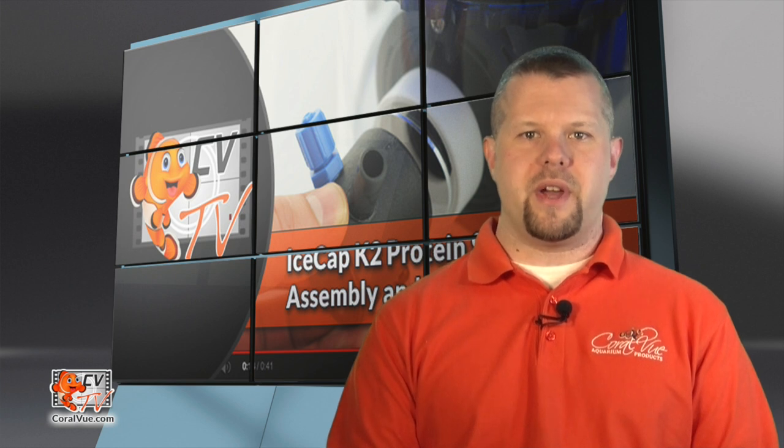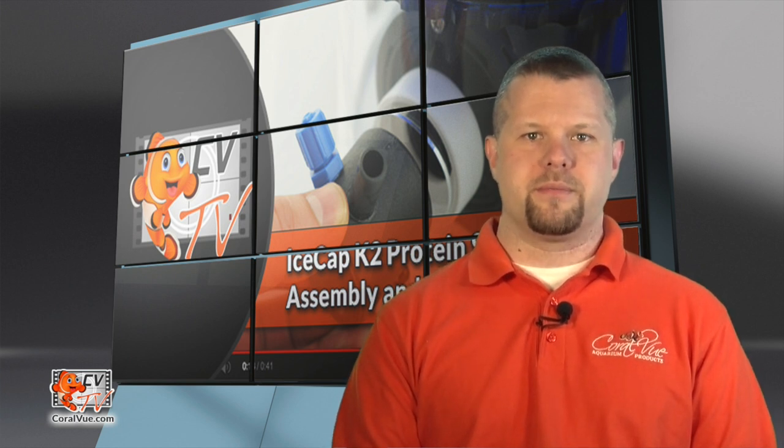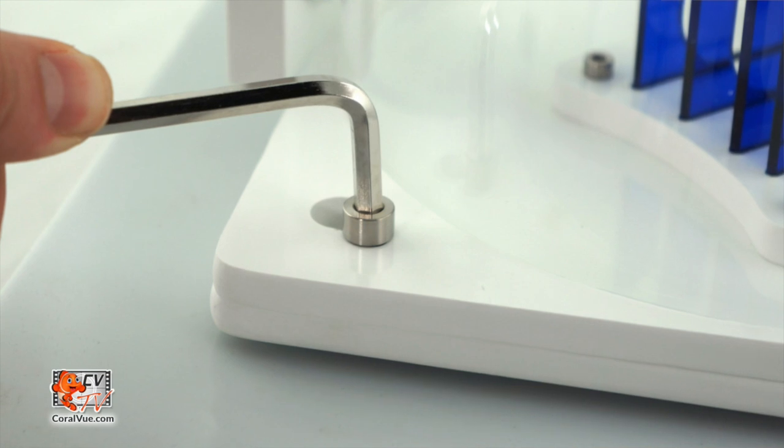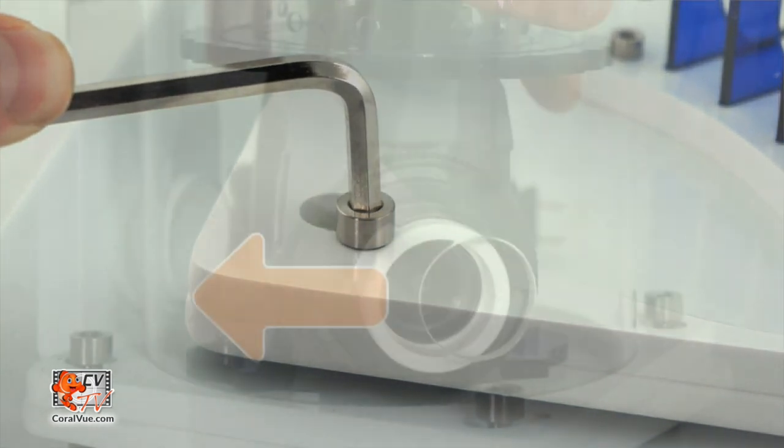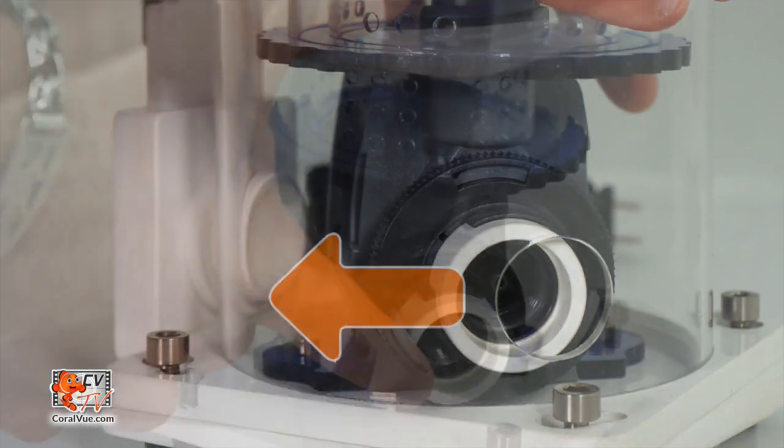On a stable surface, place a towel or something to prevent any scratches while assembling. With the supplied Allen keys, loosen the four screws along the four corners of the base of the skimmer. Twist counter-clockwise and lift off.